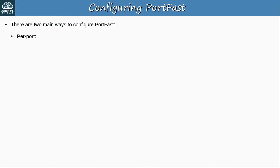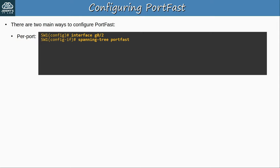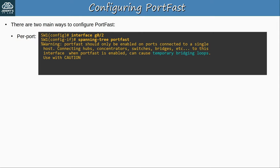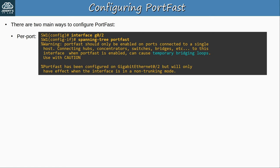There are two main ways to configure PortFast. First is configuring it on a per-port basis in interface config mode. The command is 'spanning-tree portfast'. After enabling it, you'll see a warning message telling you that PortFast can cause temporary bridging loops — layer 2 switching loops — because it moves ports immediately to forwarding. It also states that PortFast will only take effect when the port is in a non-trunking mode, meaning when it's an access port. Later, we'll see how to activate PortFast on trunk ports too.